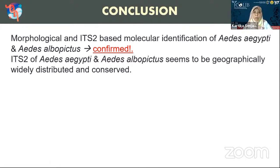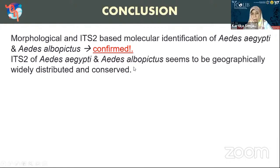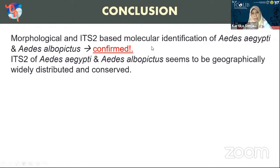From our results, we can conclude that morphological identification and DNA barcode based on ITS2 sequence of Aedes aegypti as well as Aedes albopictus confirm that the vector identity is consistent — morphological and molecular-based analyses are relevant to each other. Furthermore, the ITS2 of Aedes aegypti and Aedes albopictus appears to be geographically widely distributed and conserved, as our sample showed 100% similarity with one from Sri Lanka, and our Aedes albopictus showed high similarity with one from Italy — geographically very far away. Thank you very much for your attention and I look forward to constructive feedback.